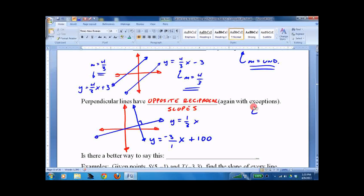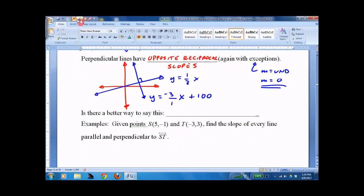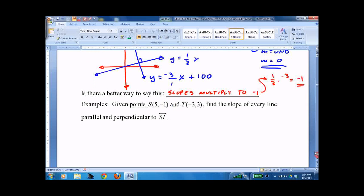Again, with exceptions, when m is undefined, perpendicular would be 0. Those really aren't opposite reciprocals, but I guess they are in one way. I don't like doing that. I like saying that the slopes multiply to negative 1. So for example, 1/3 times negative 3 equals negative 1. I prefer to do it that way. That's just me though. Opposite reciprocal doesn't really resonate with me.